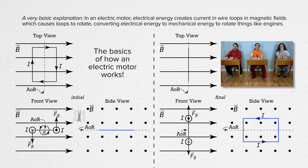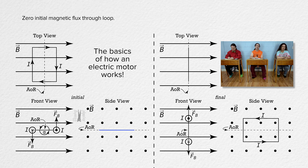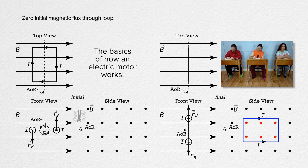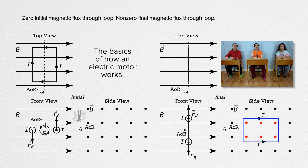In the side view, in the initial position, you can see that there are zero magnetic field lines passing through the loop. Therefore, initially there is zero magnetic flux through the loop. After the loop has rotated 90 degrees, in the final position in the side view, you can see there are magnetic field lines coming out of the screen and passing through the loop. That means that in the final position there is magnetic flux passing through the loop. Therefore, from the initial to the final position of the loop, the magnetic flux is increasing.